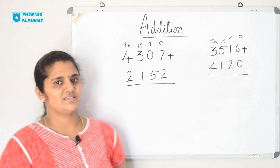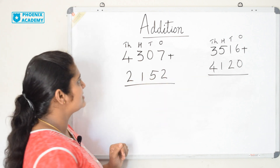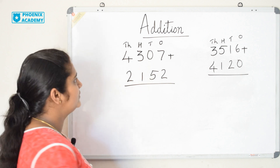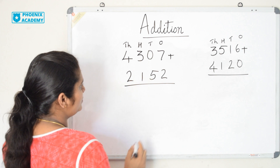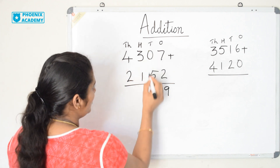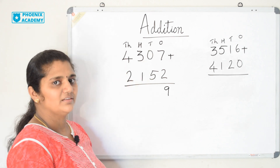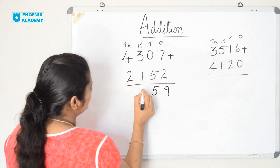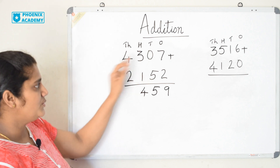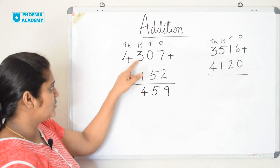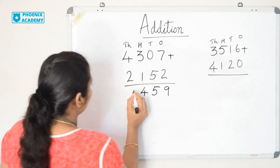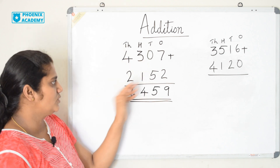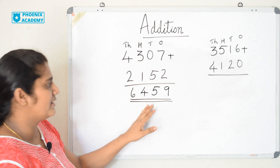Now let us learn addition of 4-digit numbers without regrouping. Let us solve: 4,307 plus 2,152. Let us add from ones: 7 plus 2 is 9. 0 plus 5 — when we add 0 to any number, the number remains unchanged, so 0 plus 5 is 5. 3 plus 1 is 4. When we add 1 to any number, the answer will be its after number, so 3 plus 1 is 4. 4 plus 2 is 6. So the sum of 4,307 and 2,152 is 6,459.